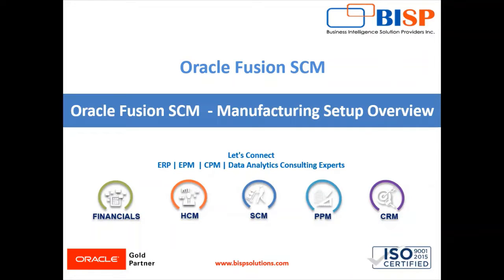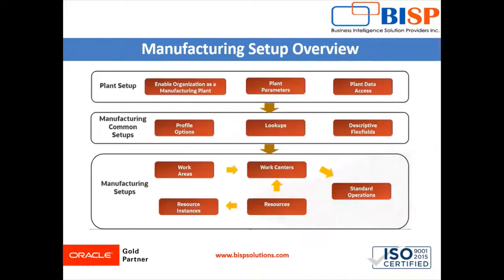Hello friends, welcome to BHP Solution. My name is Lokesh Gandhi and today's session we are going to look at the manufacturing setup overview of Oracle Fusion Supply Chain Management. On the screen you can see the high-level process flow diagram of a manufacturing plant. It shows the sequence of steps to set up a manufacturing plant. The setup includes the plant setup, the manufacturing common setups, and the last one is manufacturing setups.